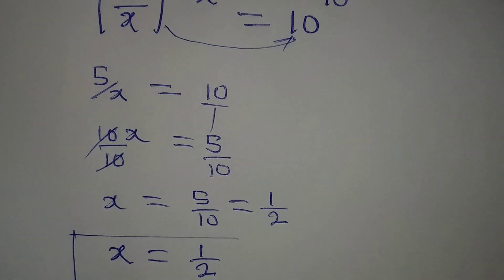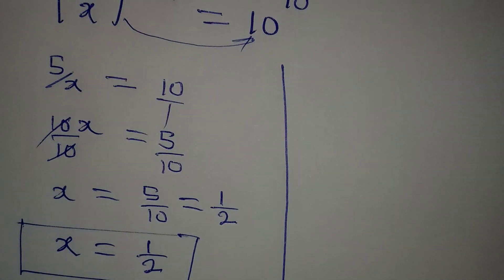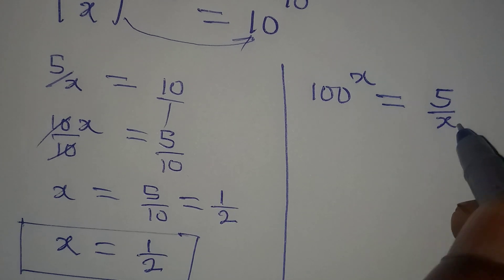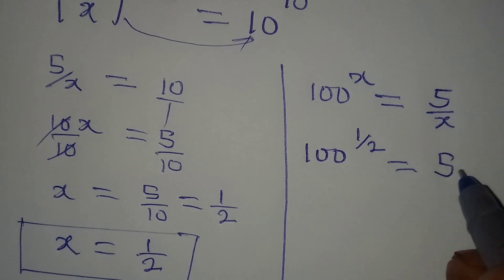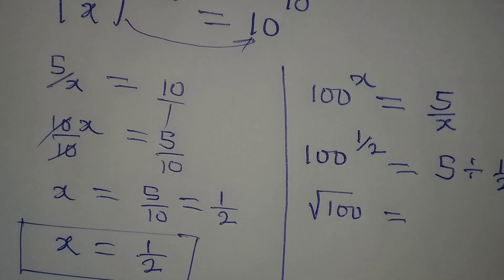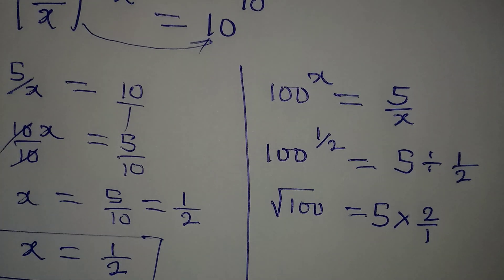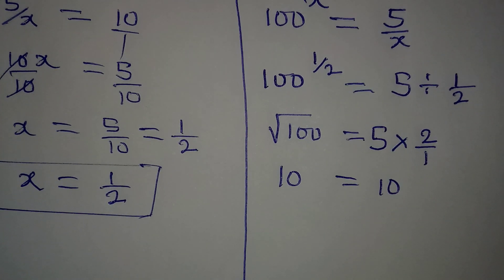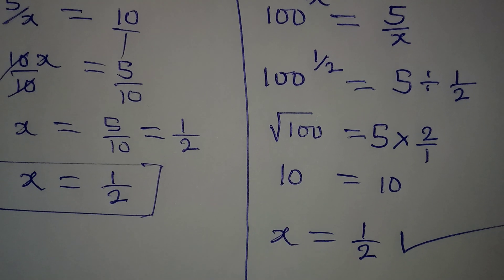Let's verify this answer. The original equation is 100 to the power of x equals 5 over x. Substituting x = 1/2: 100^(1/2) equals 5 divided by (1/2). The left side is the square root of 100, which is 10. The right side is 5 multiplied by 2, which is also 10. This confirms that x = 1/2 satisfies the given equation.